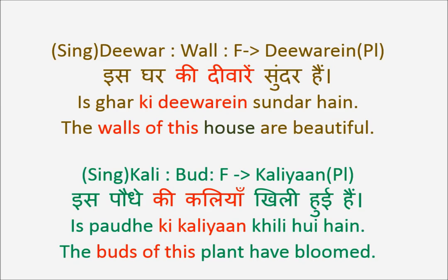Let's revise: Ka is for masculine singular. When masculine singular turns to plural, it becomes Ke. If it is singular feminine, it is Ki; if it is plural feminine, it still remains Ki — just as we saw in Is Ghar Ki Diwaare Sundar Hai and Is Paudhe Ki Kaliya Khili Hoi Hai.